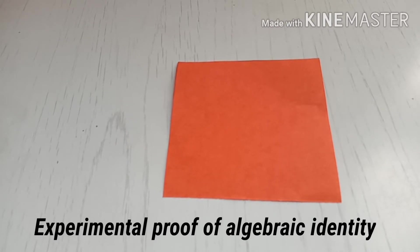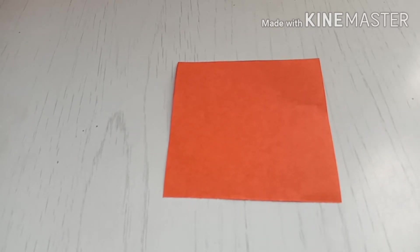You will learn almost 12 to 13 algebraic identities in your high school studies. From sixth standard, we learn the basic four identities. One of them is a square minus b square equals a plus b into a minus b. Today I am going to demonstrate that.